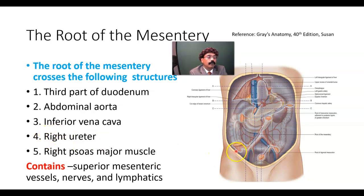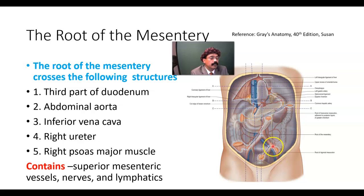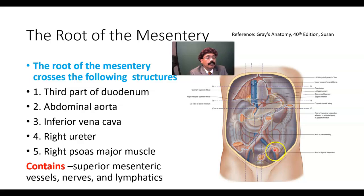The sigmoid mesocolon is seen here, close to the ureter at the pelvic brim, near the bifurcation of the common iliac artery into the internal and external iliac arteries, and closely related to the psoas major muscle. One limb goes to the level of sacral vertebra 2, and the left limb passes along the medial side of the psoas major muscle. The root of the mesentery contains the superior mesenteric vessels, nerves, and lymphatics.